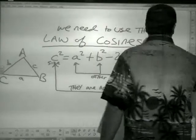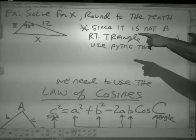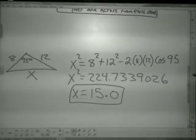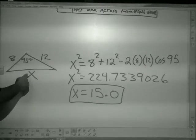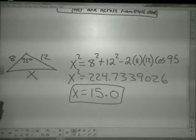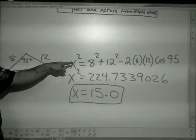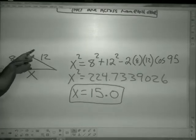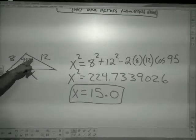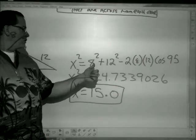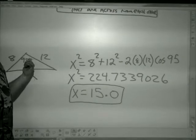Let's look at our original problem — solve for x. We have two sides and the side we're trying to find is across from the given angle. So: the side I want to find squared equals one of the other sides squared plus the other side squared, minus two times those same two sides times the cosine of the angle across from the side I want. Enter all of this into your calculator — make sure you're in degree mode because the angles are in degrees.